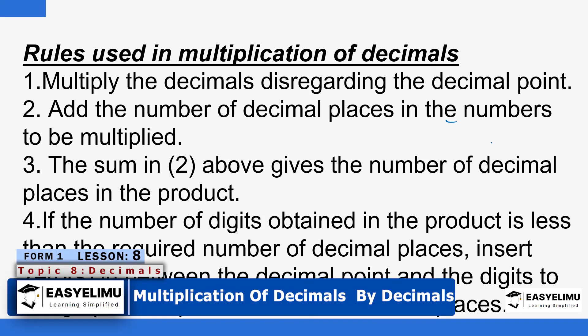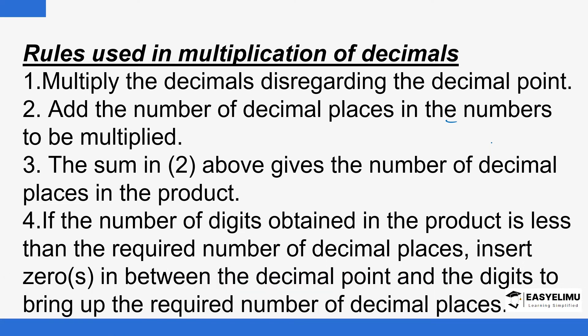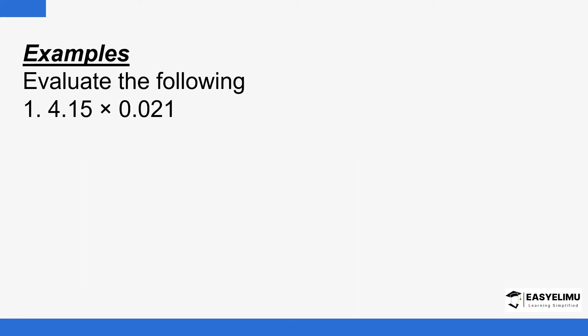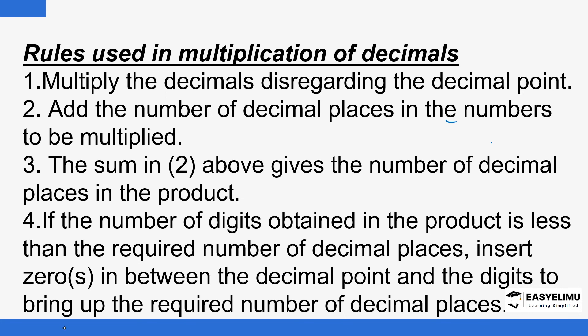So we have some rules when you are multiplying decimals — you have to apply them. The first one is that when multiplying decimals you start by disregarding the decimal point, so you assume it doesn't exist. For example, if you have 0.24 multiplied by 0.2, you assume the decimal point doesn't exist.